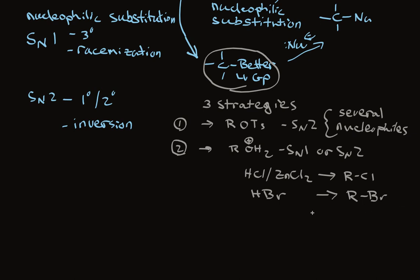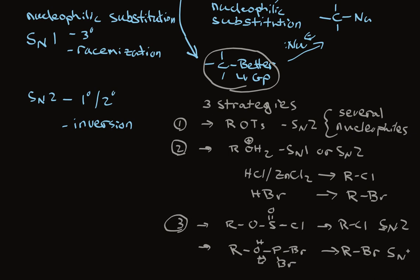And the third strategy is to create an intermediate with a very good leaving group, having reacted with the reagent itself. So, the alcohol has turned into this guy. We're going to make chloride. And this is SN2 chemistry only. Or turned into a phosphorus equivalent. And this is SN2 chemistry.